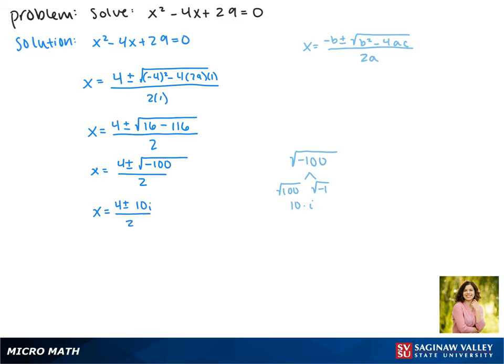Breaking them up into separate fractions we get x equals 4/2 plus or minus 10i/2. We can simplify this to give us x equals 2 plus or minus 5i. So these are complex solutions.